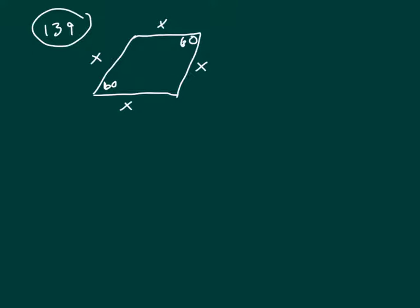We have a parallelogram with four sides that are equal, and I've labeled those X. We know that this angle and this angle is 60, and in parallelograms, adjacent angles have to sum up to 180 degrees, so that means this is 120.